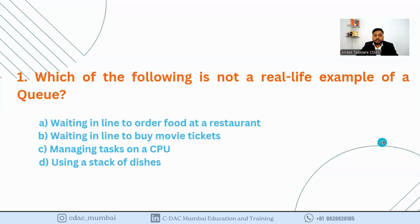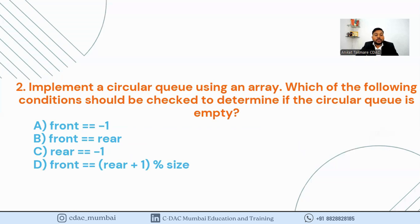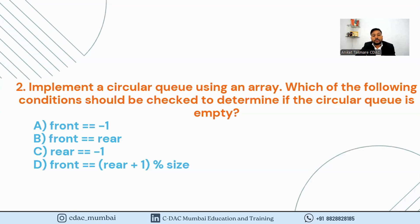Now let's see the second example: implement a circular queue using an array. Which condition should be checked to determine if the circular queue is empty? Options: A) front == -1, B) front == rear, C) rear == -1, D) front == (rear + 1) % size. A circular queue is one in which the first and last elements are connected. Option A (front == -1) is correct for a simple queue, not a circular queue. The correct answer for an empty circular queue is option B: front == rear, meaning there is no element in the queue.